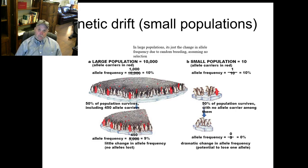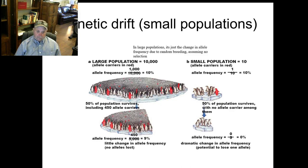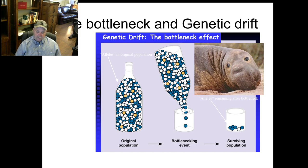Genetic drift becomes important when we have very small populations, or what we call a bottleneck. For example, say you have a large population of 10,000 — there's a massive catastrophe and only 50% of the population survives. In the larger population there were 10% red individuals, but more of them happened to live on the side where the catastrophe occurred. Now you're down to 9% red individuals in the smaller population. If you lose 50% of the organisms and it happens to include the few individuals with the red allele, that trait could be lost or become very rare — it can have a very negative or deleterious effect, or sometimes a positive one.